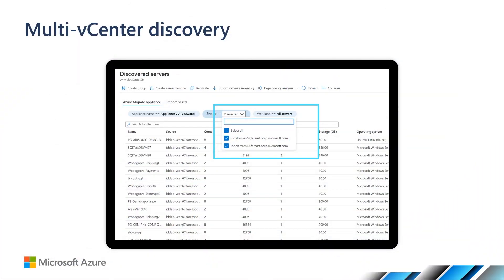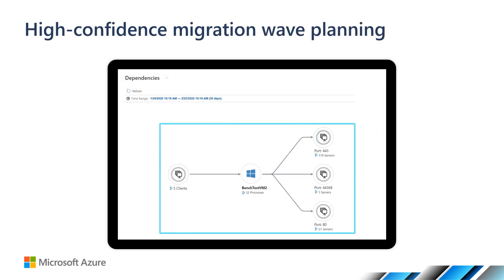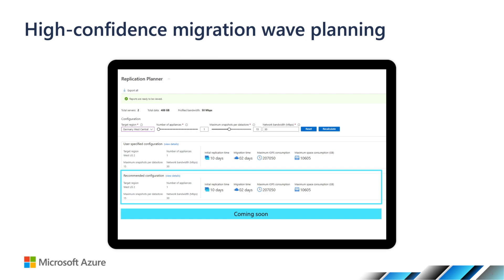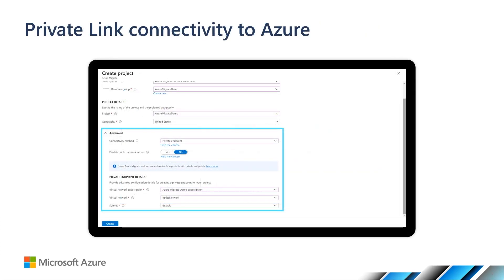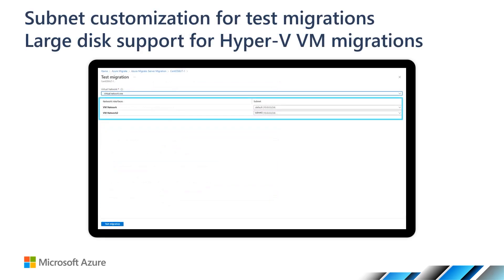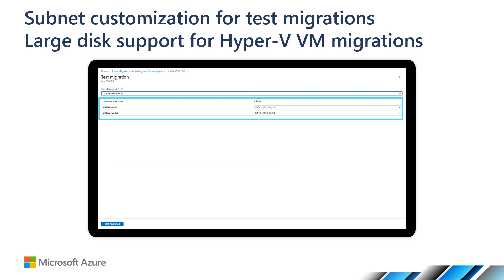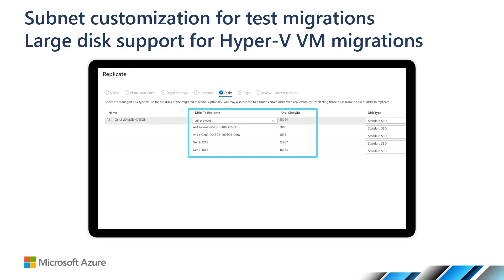Before we end today's session, I want to give you a quick teaser at some of these announcements. Discover virtual machines from multiple vCenter servers using one Azure Migrate appliance. Use the dependency mapping capabilities and recommendations for replication and migration downtime for building confidence in your migration planning. Ensure security and compliance with organizational policies with VMware VM discovery and migrations over a private network. Customize the subnet selection for your test migration, and you can also migrate your Hyper-V virtual machines with large disk support up to 32 TB.